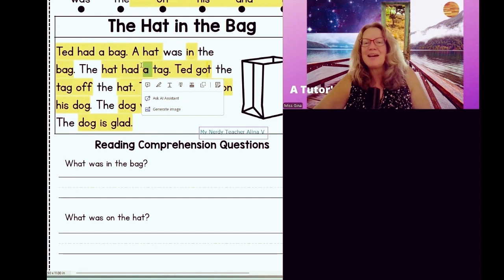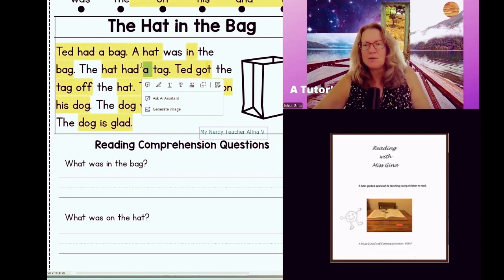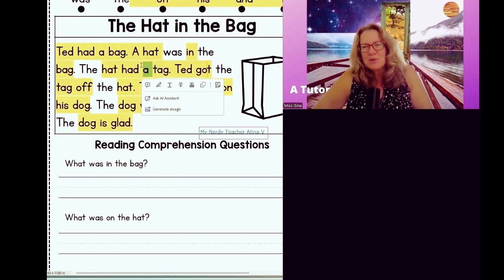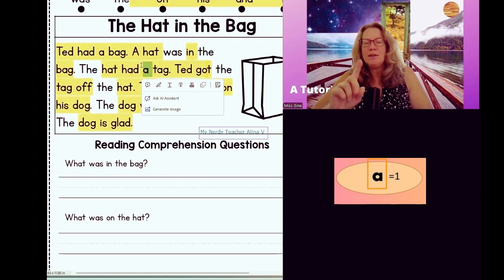The hat had a tag. In the reading program that I compiled based on all my tutoring lessons, at the end of it I include words. There are frequency words, right? There are words that we're going to have to start understanding they don't follow these rules, but maybe a next rule. So there's the word 'for', for one.